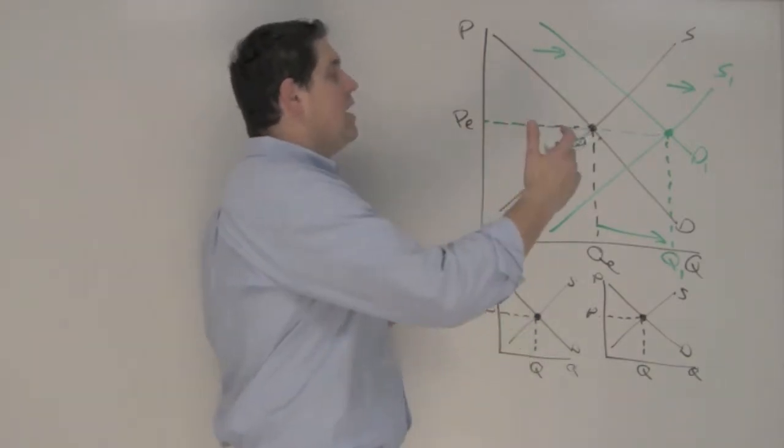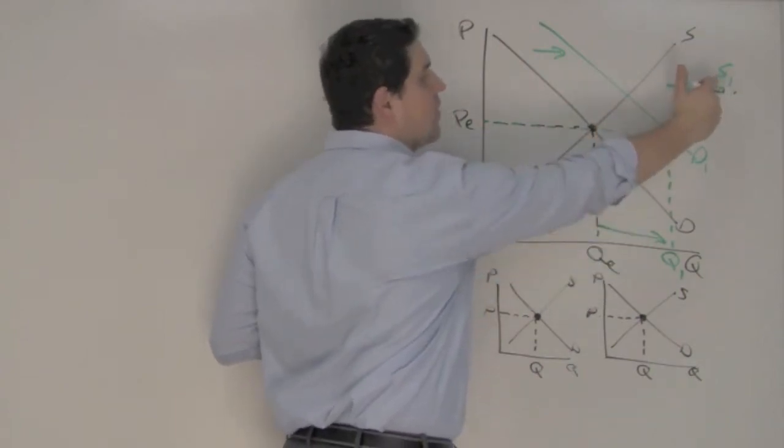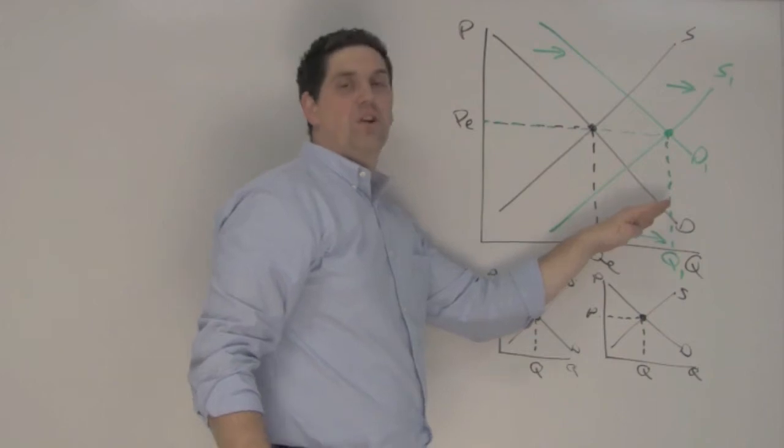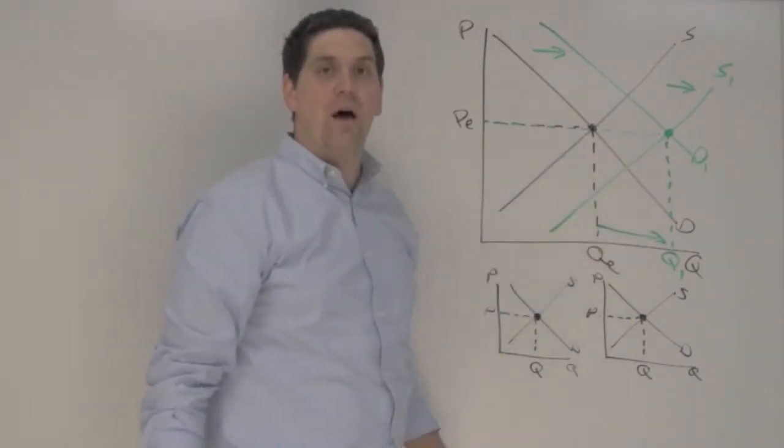It could increase. For example, if this demand curve shifted even further up, then price would have been up. If the supply curve shifted really far to the right, then that would have caused the price to go down.